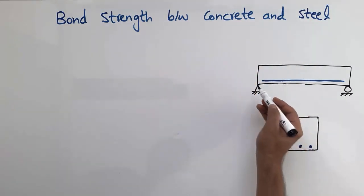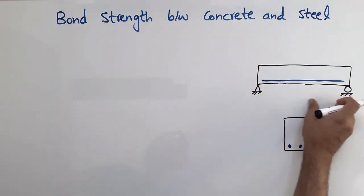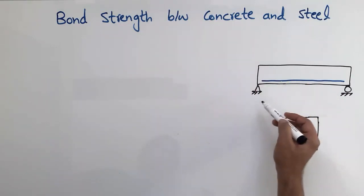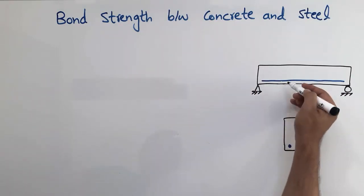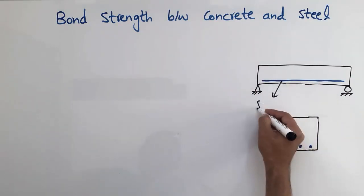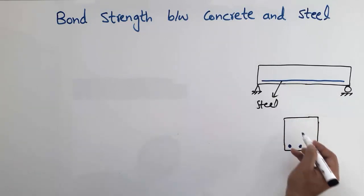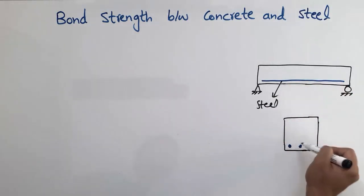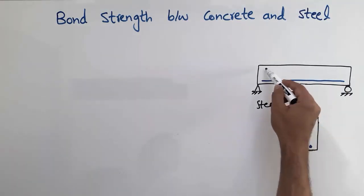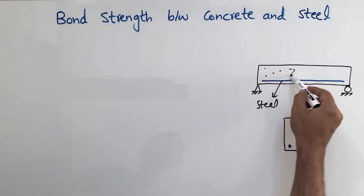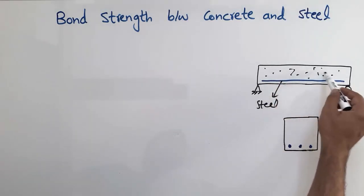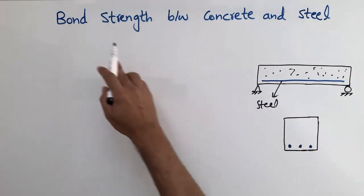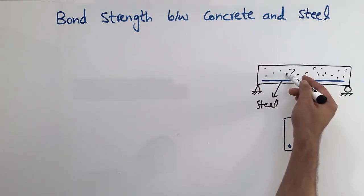Let's consider this is a beam — the longitudinal view of this beam with the reinforcement. There is a steel bar provided in the beam, and this is a cross section of the beam. You can see the cross view of this beam and where the concrete has been poured. I just consider an example to explain the factors affecting the bond strength between the concrete and the steel.